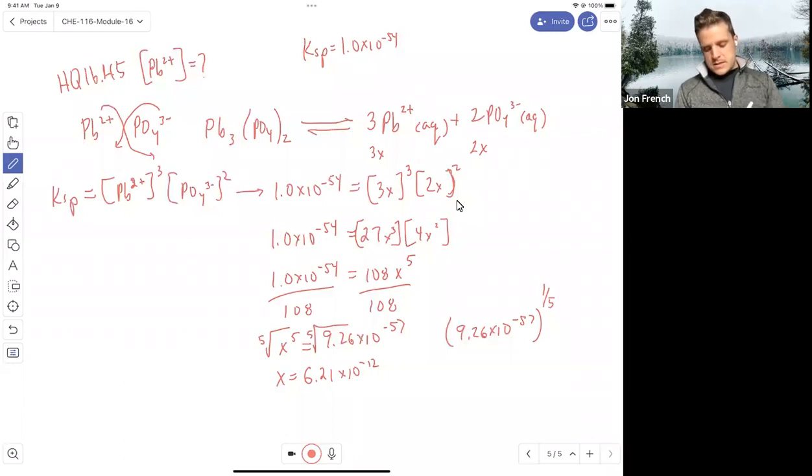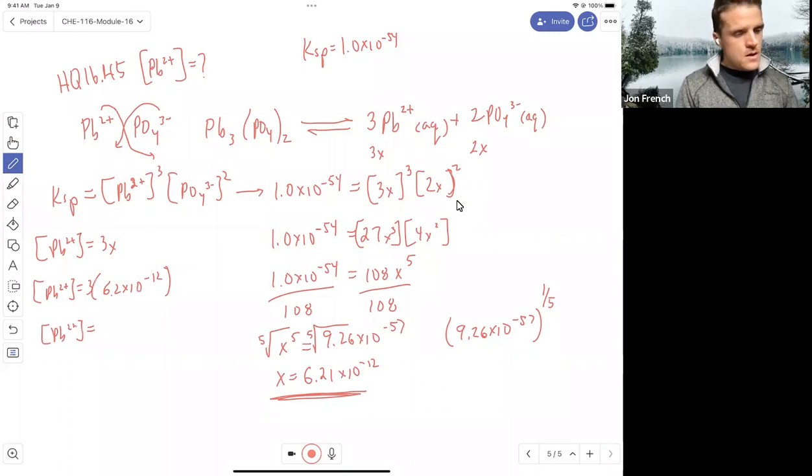We found X. X is 6.2 times 10 to the minus 12. We're asked for lead concentration. What is lead concentration? Lead is 3X. So my lead concentration equals 3 times 6.2 times 10 to the minus 12. My lead concentration equals 1.86 times 10 to the minus 11. Based on the information given us, I would say two significant figures. So I'd say 1.9 times 10 to the minus 11 is going to be my concentration of lead in solution.